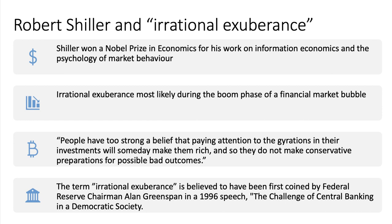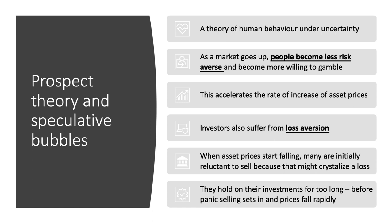Robert Shiller, a Nobel Prize-winning economist, has done superb work on information economics, information asymmetries, and the psychology of market behavior. During a financial market bubble, it is likely we see irrational exuberance of investors — people have too strong a belief that paying attention to the fluctuations in their investments will someday make them rich, so they're not prepared to make conservative preparations for when the market turns bad. This term was coined by Federal Reserve Chairman Alan Greenspan in a speech in the mid-1990s.